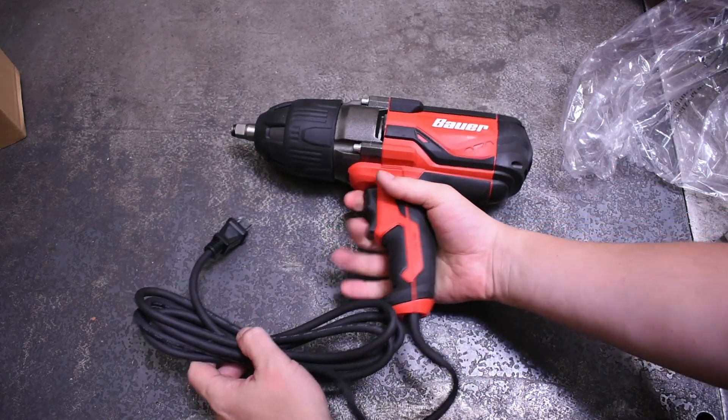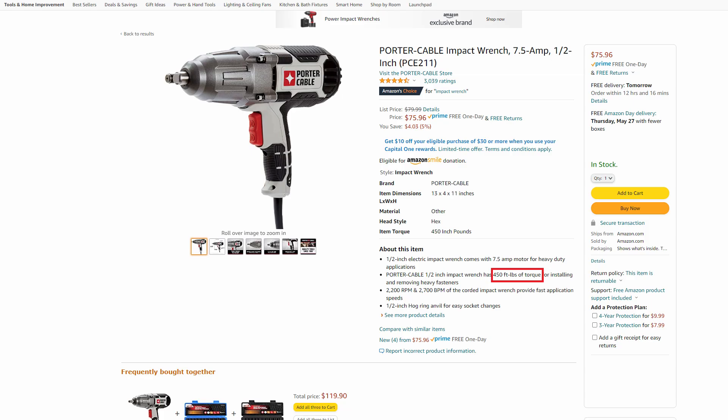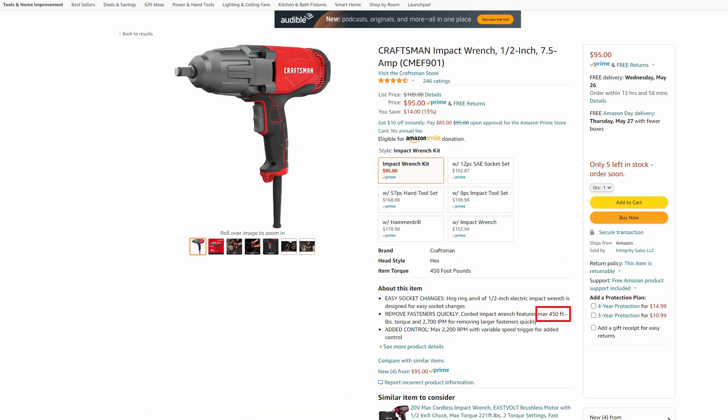Most corded impacts, even from top brands, advertise 300, 345, 450 foot pounds, and that's around the same price or higher in this case on corded impacts, and that's usually 7 to 7.5 amps in most cases.